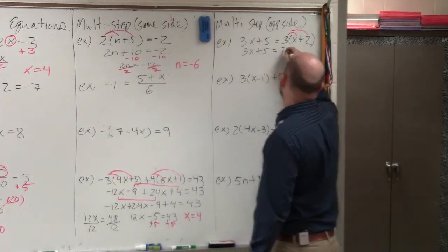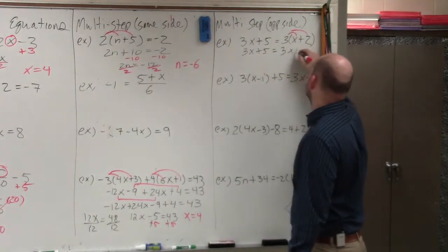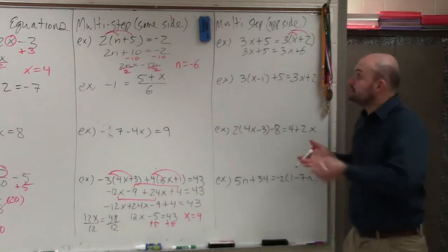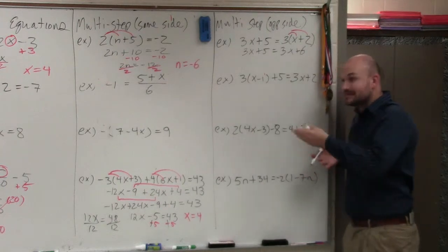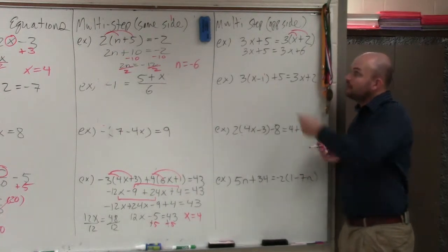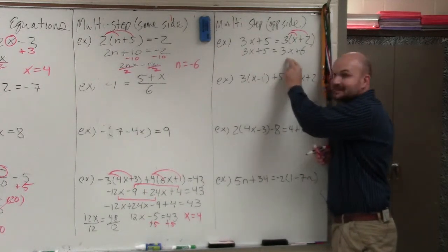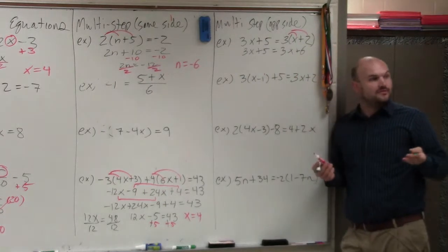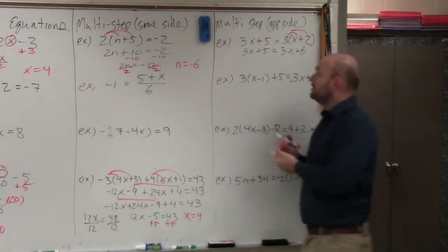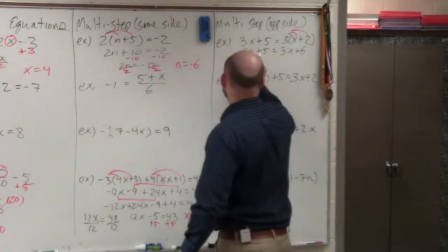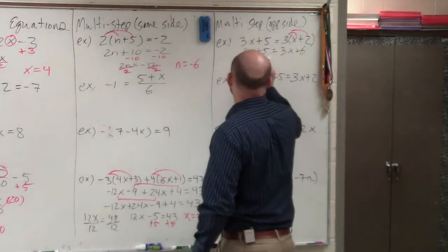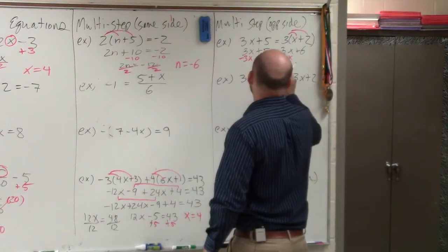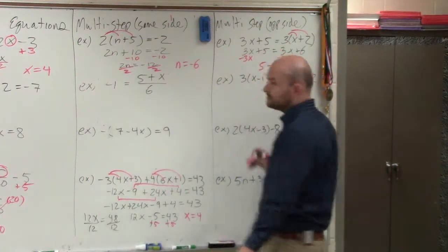3x plus 5 equals 3x plus 6. Then the next step is to get the variable on the same side. I have a 3x on one side and a 3x on the other side. I just need to eliminate a 3x on one side, so I'm going to subtract a 3x. Whatever I do on one side, I have to do on the other. And what I have is 5 is equal to 6.